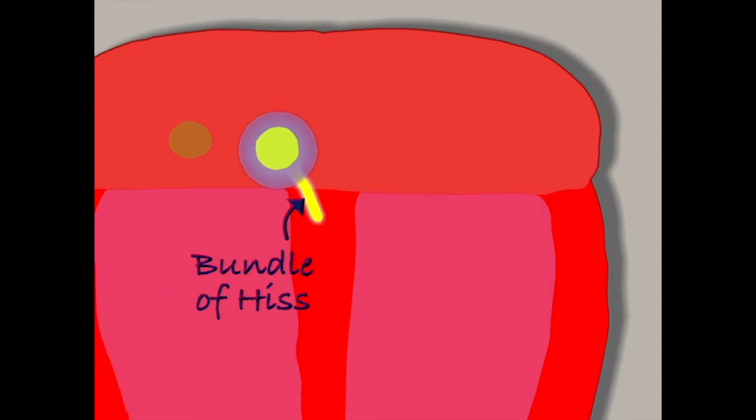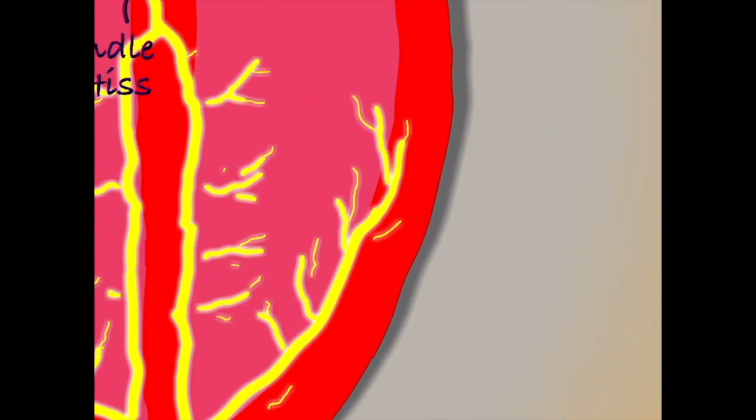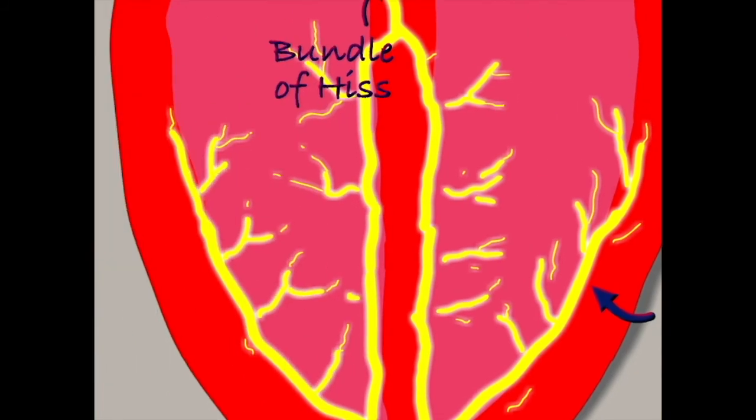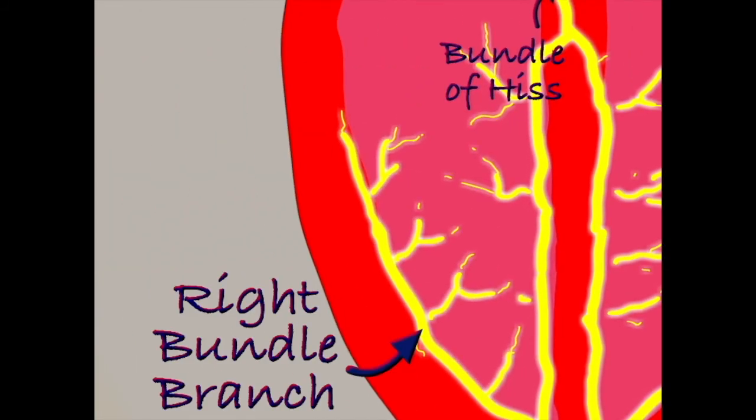The bundle of Hiss quickly splits into the left and right bundles, the left bundle spreading down the wall of the left ventricle, and the right bundle spreading down into the right.